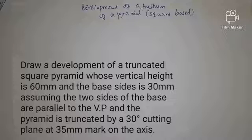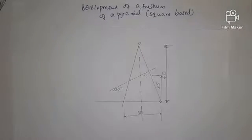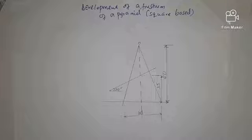Assume the pyramid is such that the two sides of the base are parallel to the vertical plane and the pyramid is truncated by a cutting plane that is 30 degrees at the 35 millimeter mark on the vertical axis. We have an illustration here of what we are going to use as a guide - the pyramid that has been cut by the cutting plane at that point 35, the vertical height is 60 and the base side is 30.